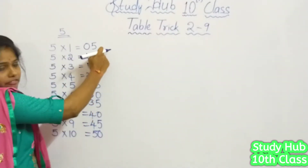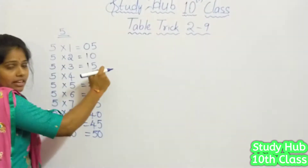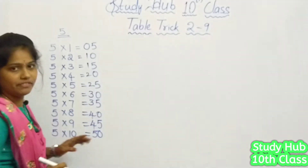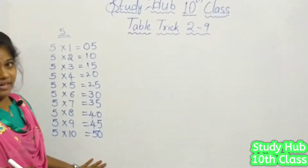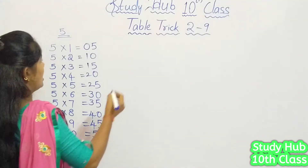So: 5 ones are 5, 5 twos are 10, 5 threes are 15, 5 fours are 20, and so on, with 5 tens being 50. This is the simple trick we have for the 5 times table.